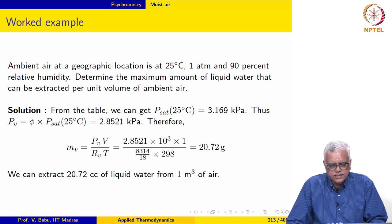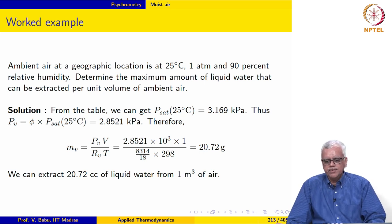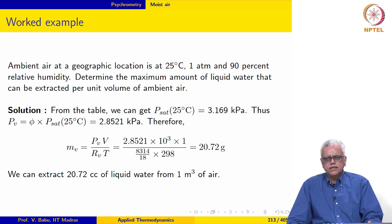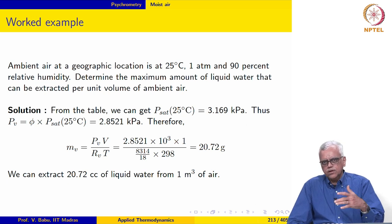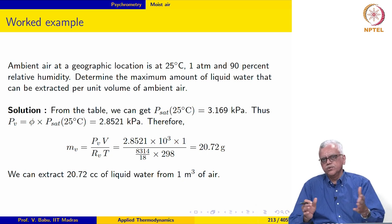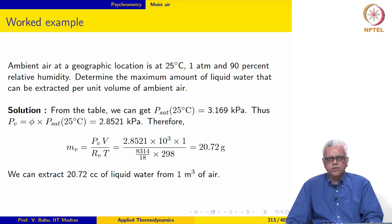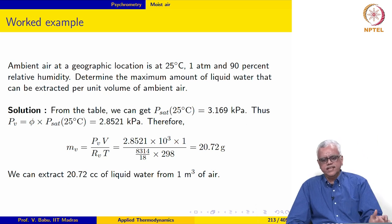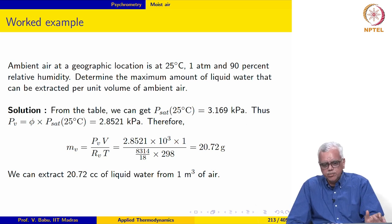The next example: ambient air at a geographic location is at 25 degree Celsius, 1 atmosphere, and 90 percent relative humidity. Determine the maximum amount of liquid water that can be extracted per unit volume of ambient air. Nowadays it is becoming popular to extract water from the air for drinking purposes, and there are machines which do this. Let us find out how much water can realistically be extracted.